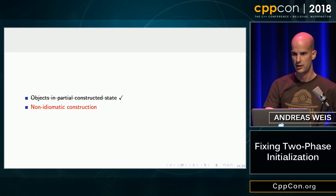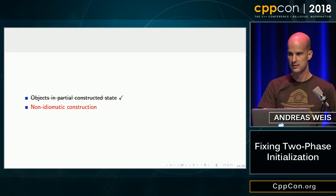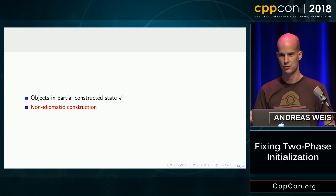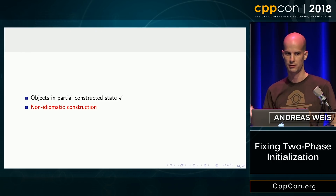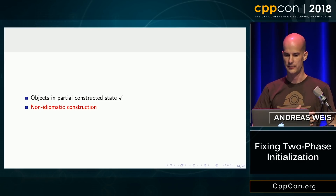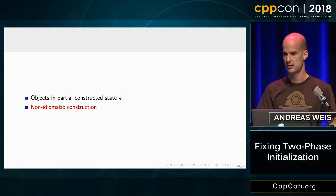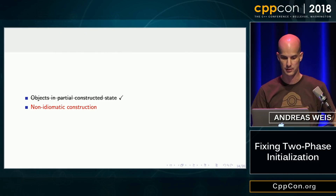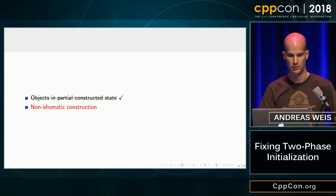This is great and solves our problem, but it creates a new one: this is no longer idiomatic construction. In C++, if we want to construct objects we call the constructor — we do not call some weird create function. This leads to problems when using things like emplace_back or make_shared, which always assume there is a constructor to be called.